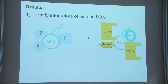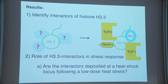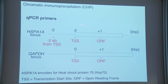With H3.3 binding all these proteins, I wanted to know their role in stress response. I asked: are these interactors deposited at a heat shock locus following a low-dose heat stress? To answer this, I performed chromatin immunoprecipitation (ChIP) with qPCR, looking at enrichment at HSPA1A — the stress-inducible gene — and GAPDH as a control. The loci I examined were 2 kilobases upstream of the transcription start site, the TSS itself, and the open reading frame/gene body of HSPA1A, plus control regions of GAPDH.